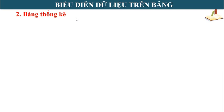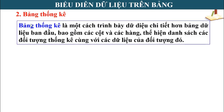Khái niệm: Bảng thống kê là một cách trình bày dữ liệu chi tiết hơn bảng dữ liệu ban đầu, bao gồm các cột và các hàng, thể hiện danh sách các đối tượng thống kê cùng với các dữ liệu của đối tượng đó. Các bạn ghi nội dung khái niệm hiện trên màn hình vào tập nhé.